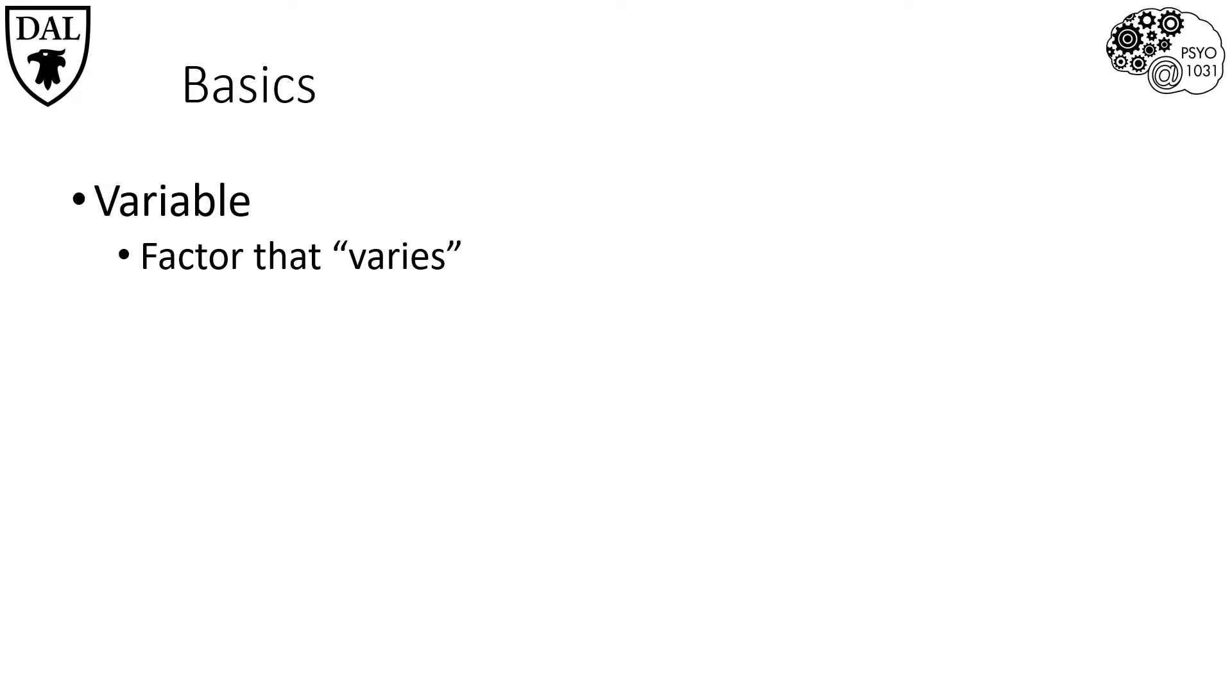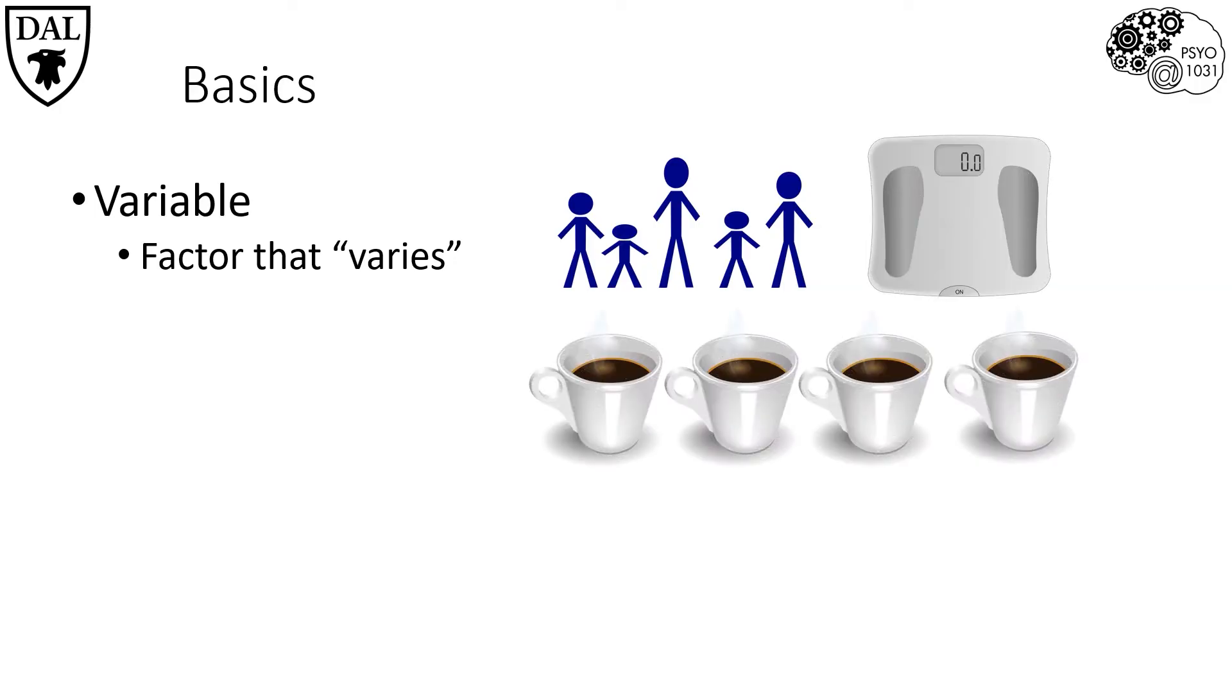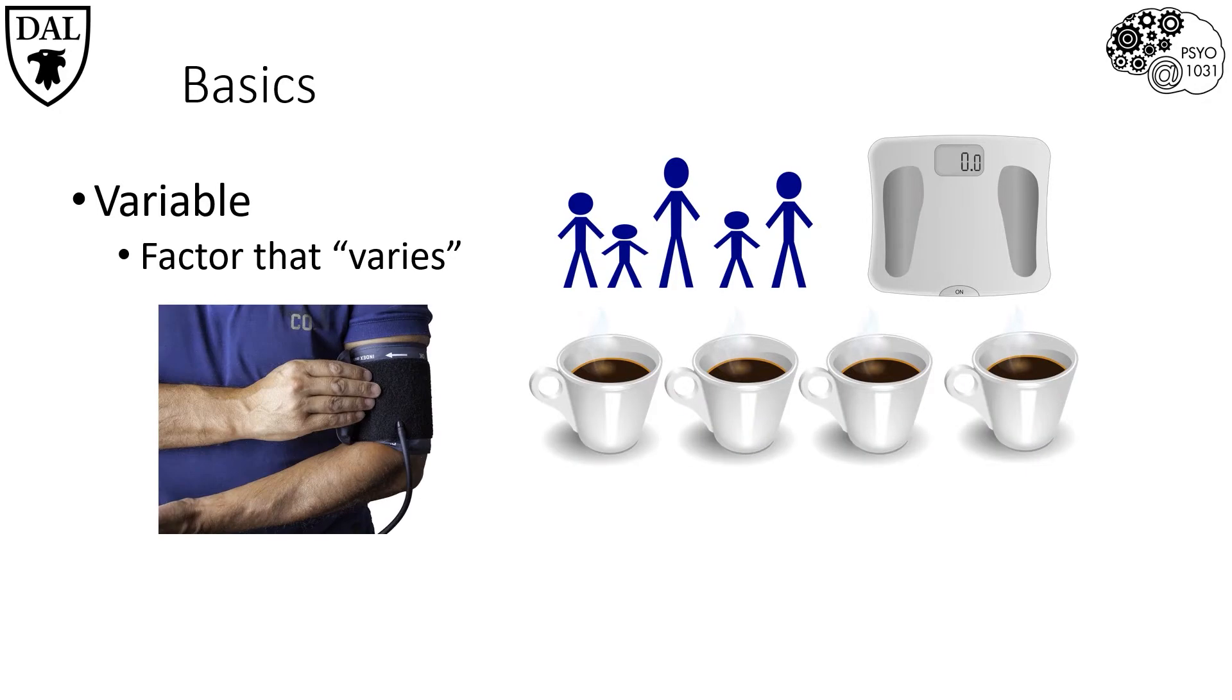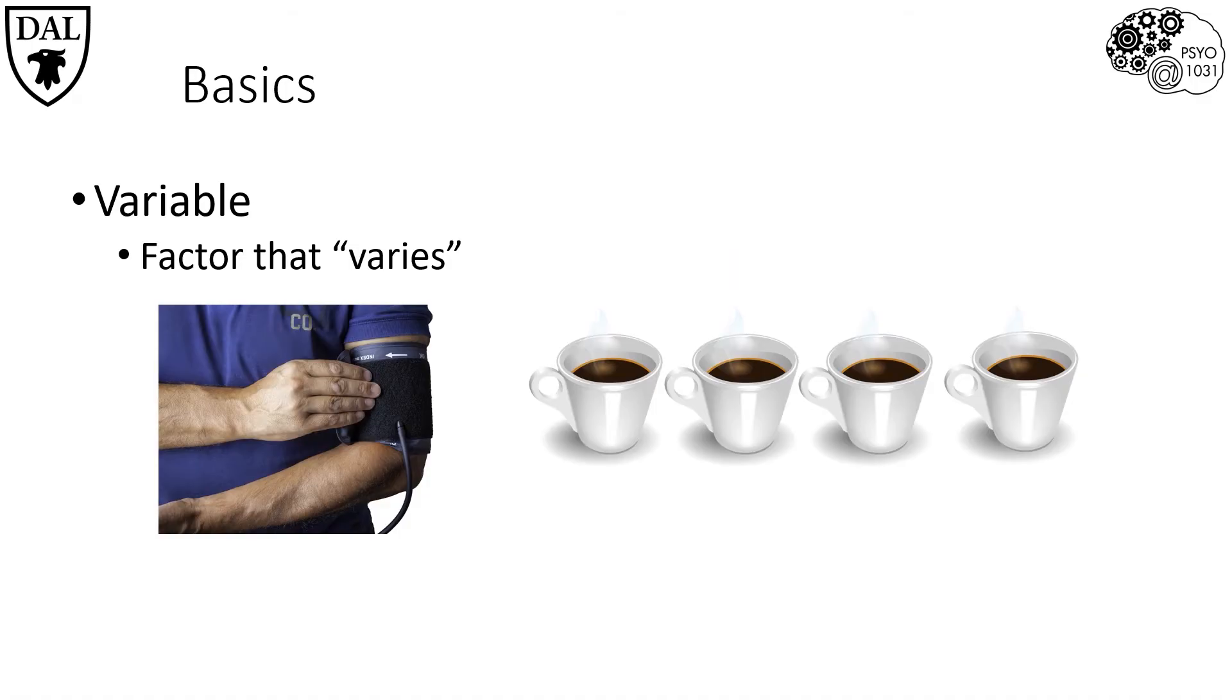Some examples are height, weight, caffeine intake, and blood pressure. So if we're interested in whether caffeine affects blood pressure, we might want to research this by measuring the variables: one, daily caffeine intake, and two, blood pressure.